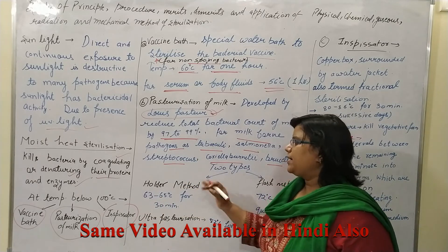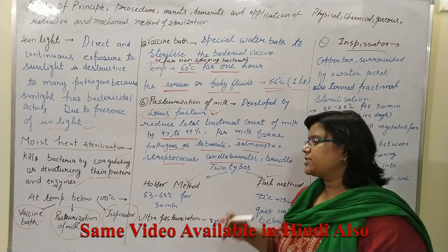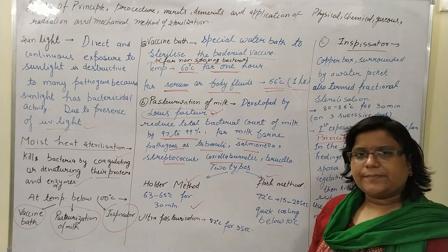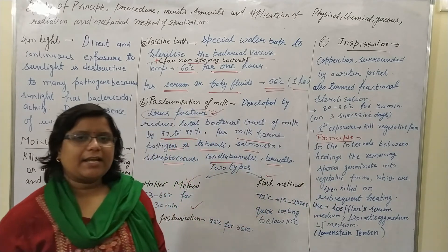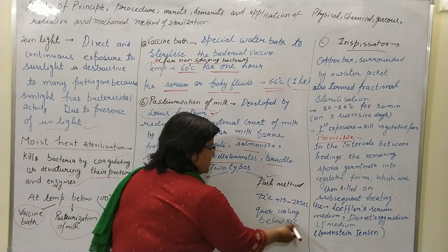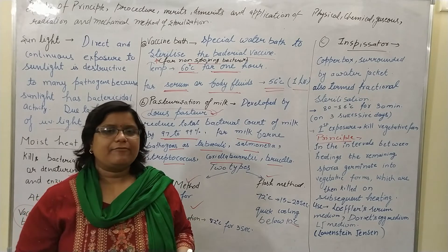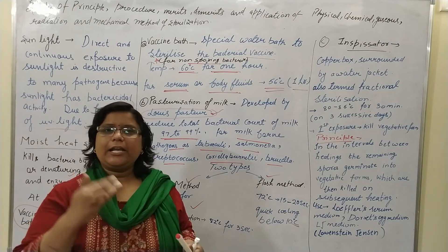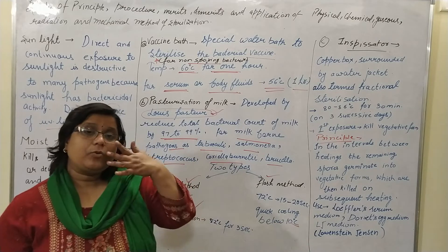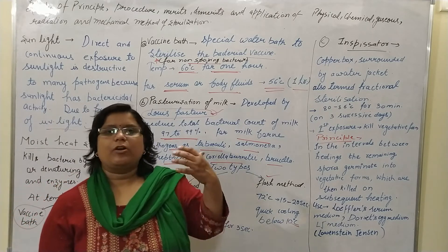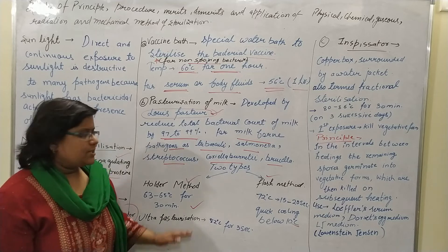In the Holder method, 63 to 65 degrees Celsius is maintained for 30 minutes. In the Flash method, 72 degrees Celsius is maintained for 15 to 20 seconds and then quickly cooled down below 10 degrees Celsius. In some books it is written below 13 degrees Celsius, so the cooling range is around 10 to 13 degrees Celsius. In the ultra-pasteurization method, the temperature is 82 degrees Celsius for three seconds and then suddenly cooled down.